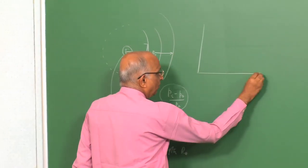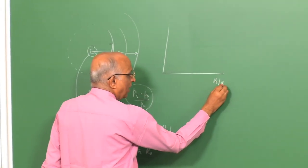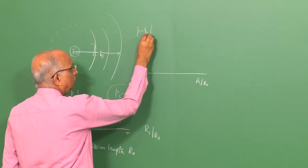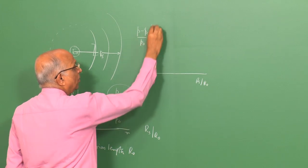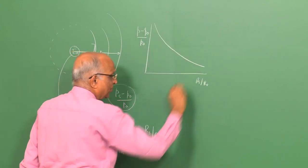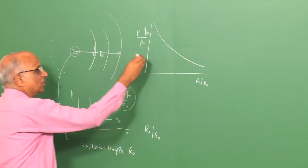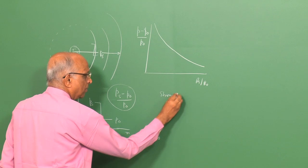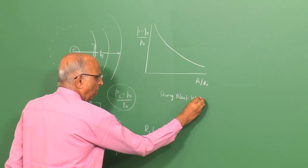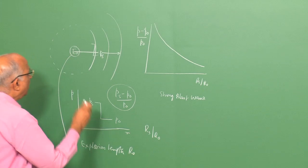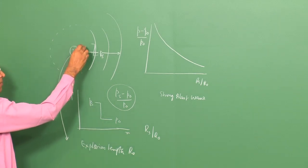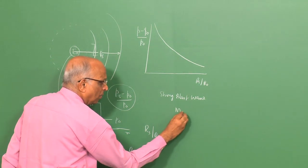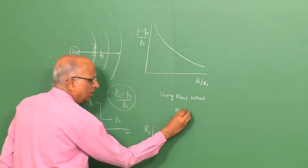As Rs/R0 increases, we found (PS minus P0) divided by P0 keeps falling rapidly. We did this for a strong blast wave — meaning in the region very near to the source where the Mach number of the shock wave formed is quite large, typically greater than around 4.